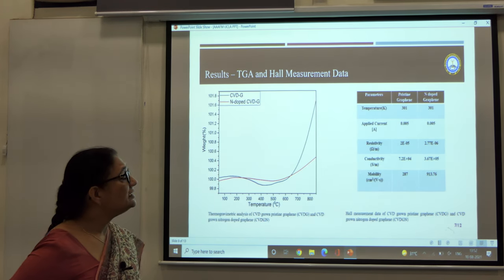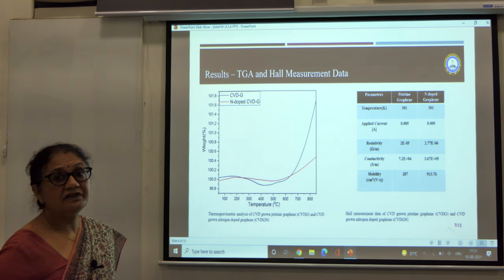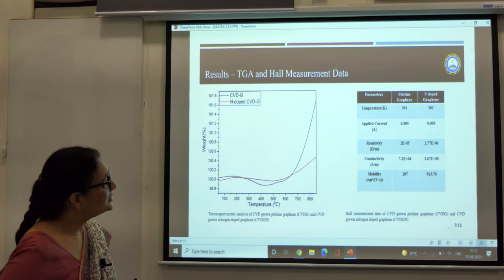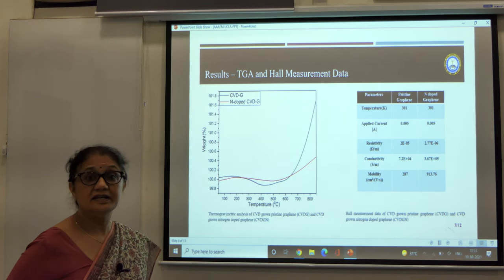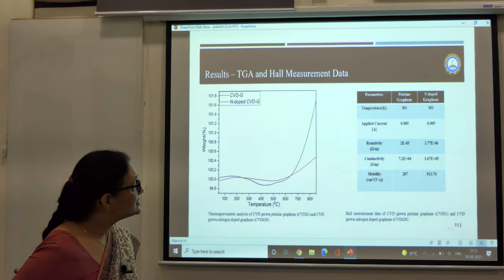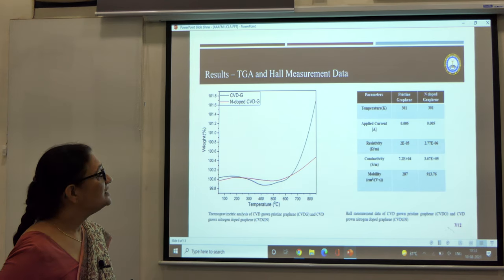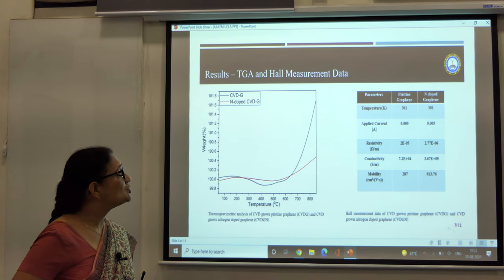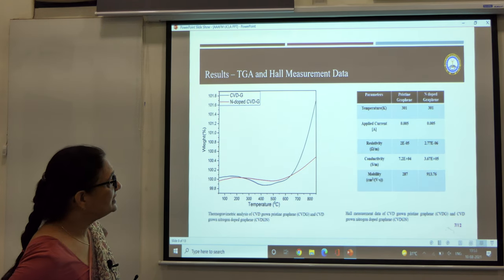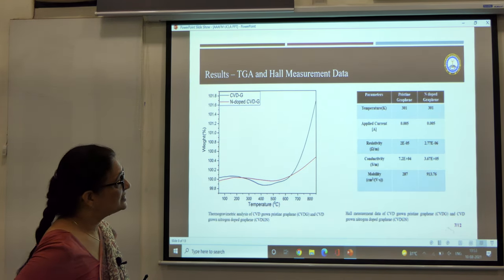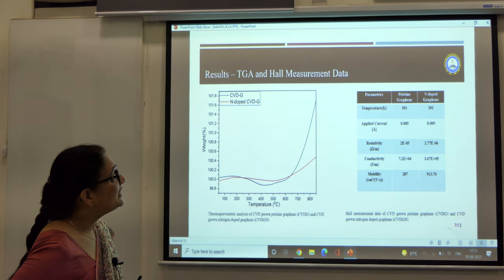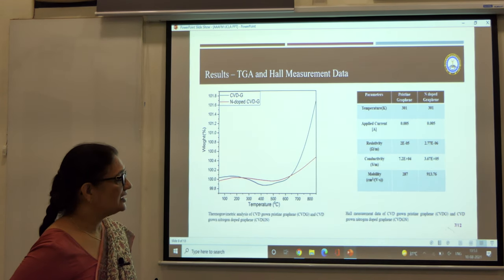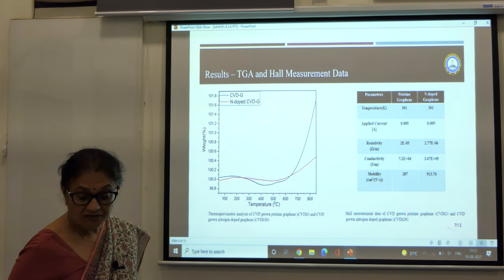Doing some Hall measurements on these samples, we found that the nitrogen doped graphene had better conductivity and the mobility also was increased. It's almost three times the mobility in case of the pristine graphene, and this leads to a very good increase in conductivity of this graphene. Nitrogen doping has been found by researchers to increase the conductivity of the samples, and we found the same.